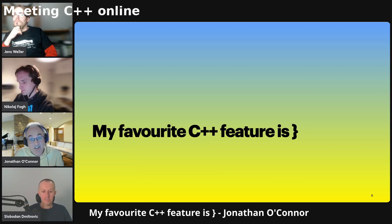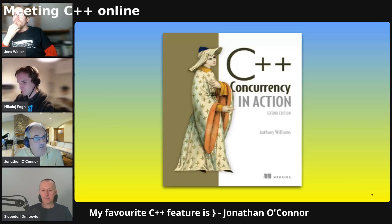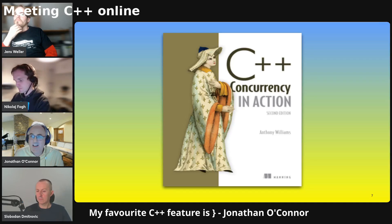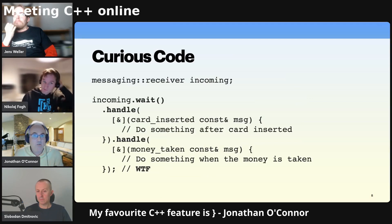And I'm not the first person to use this — I stole it shamelessly from Roger Orr. And I know Peter Sommerlad has also used it in some of his training courses. But about five years ago, I was reading this wonderful book by Anthony Williams, C++ Concurrency in Action, and I came across a piece of code in a section on actor-based programming. And this was the code, and it left me scratching my head for a couple of hours figuring out what on earth was happening.